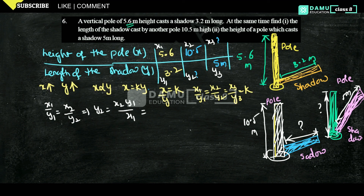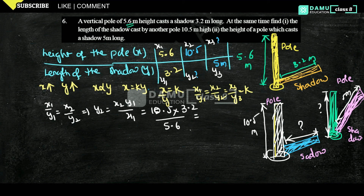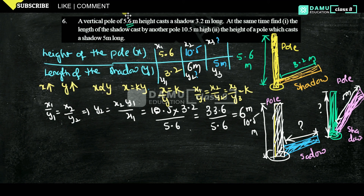Substituting to find y2: y2 = (10.5 × 3.2) / 5.6 = 33.6 / 5.6 = 6 meters. So the length of the shadow cast by the 10.5-meter pole is 6 meters.